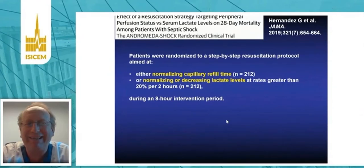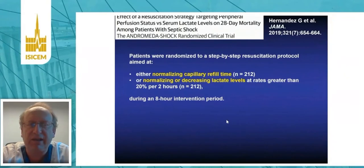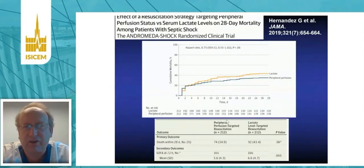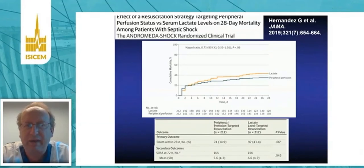Can monitoring of peripheral perfusion help guide resuscitation? This was addressed in a study published by Hernandez in JAMA. They compared a strategy of normalizing capillary refill time against a strategy of normalizing or decreasing lactate levels. Although considered a negative study, the difference in mortality at 28 days almost reached statistical significance in favor of peripheral perfusion-targeted resuscitation, and peripheral perfusion-targeted resuscitation resulted in less organ failure.